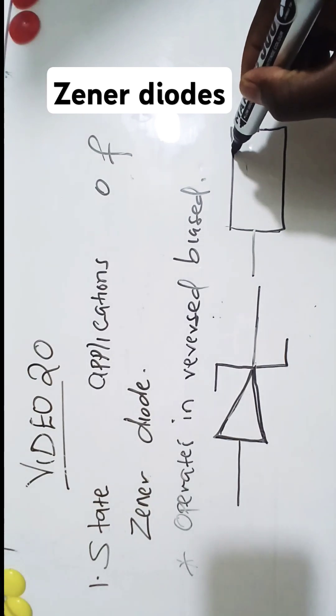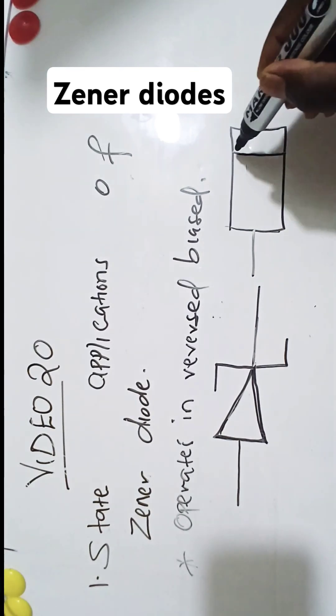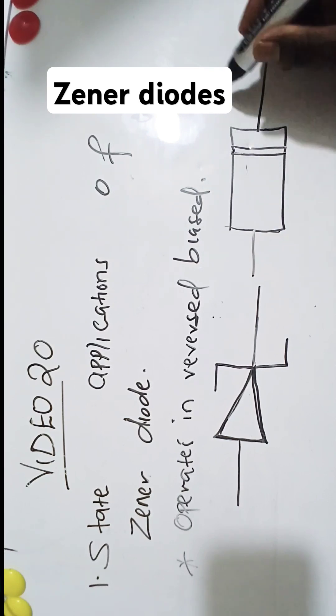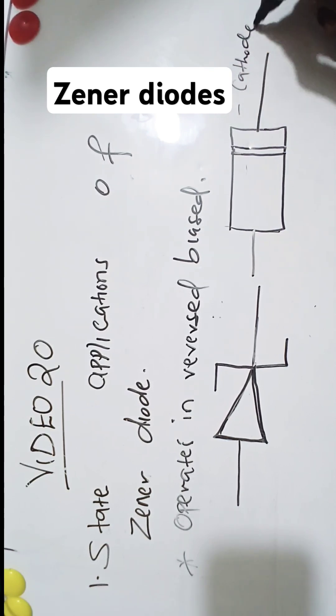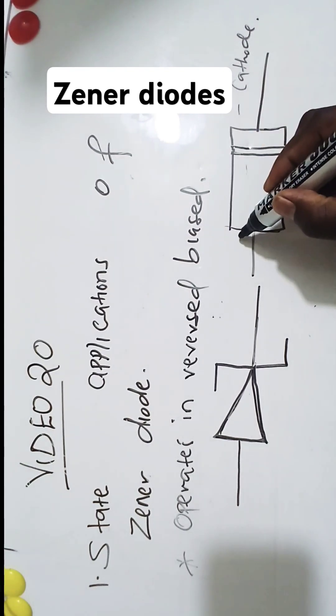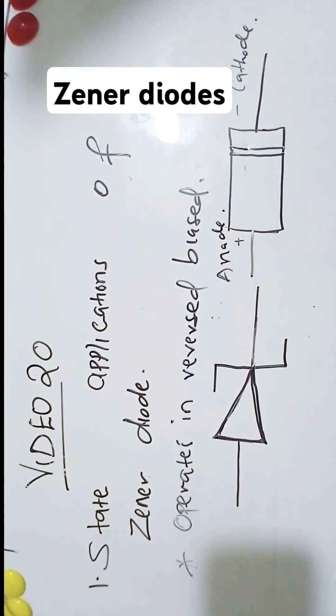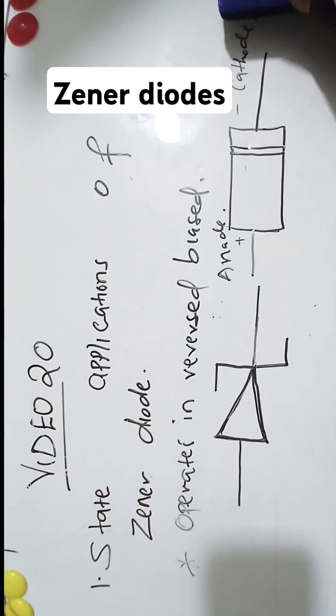So there is this lining. The side which is closer to this lining is what we call the negative terminal or cathode. The side which is positive is what we call the anode. Now let us look at some of the applications of Zener diode.